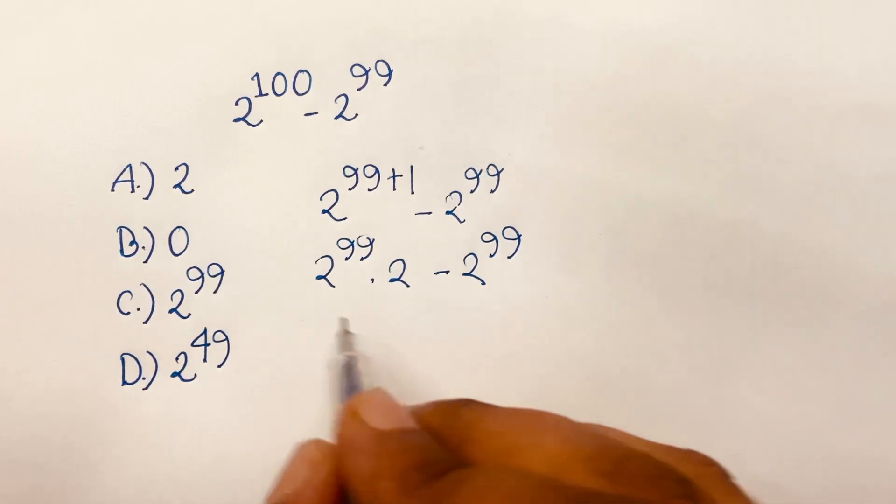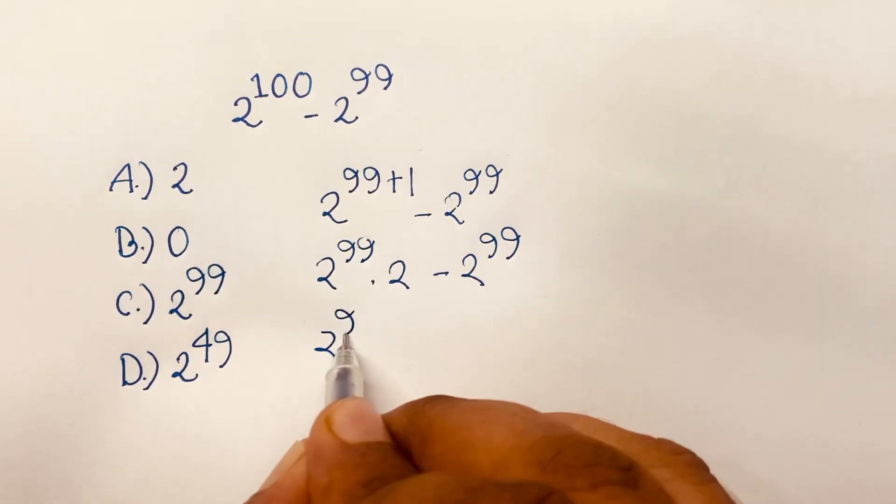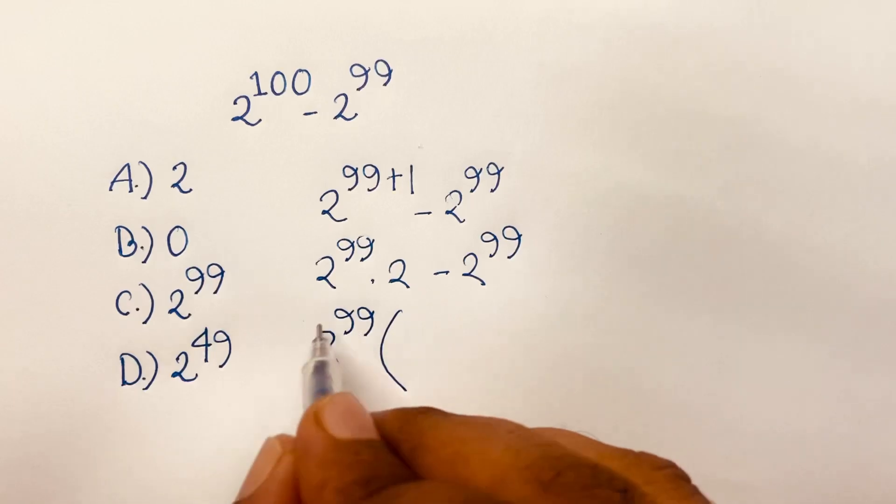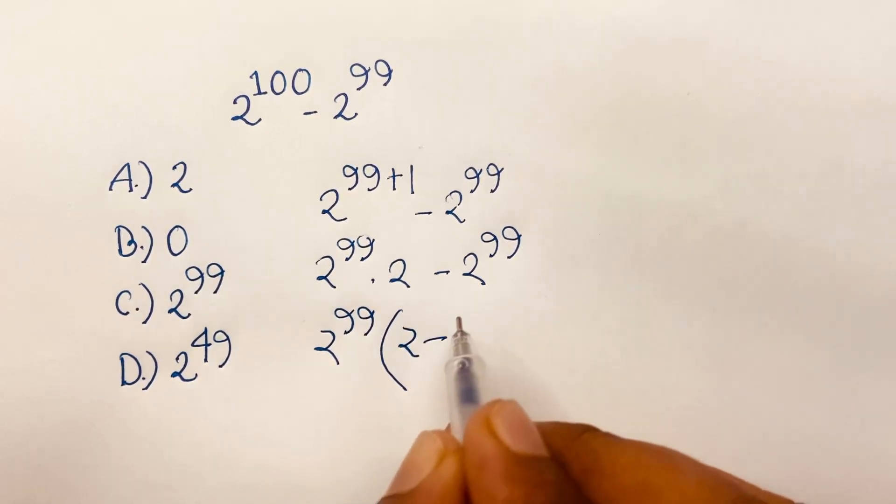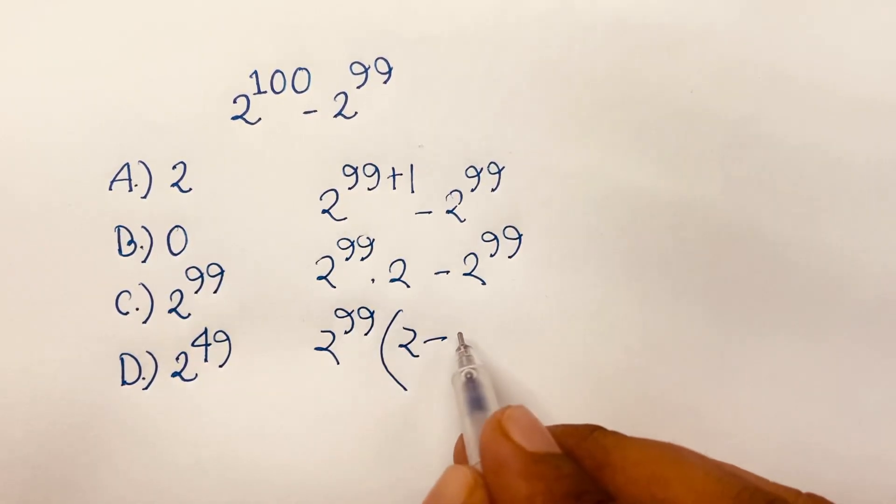Then I can say here 2 to the power 99 is common. So this divide this, it will be 2 minus this divide this, it will be 1.